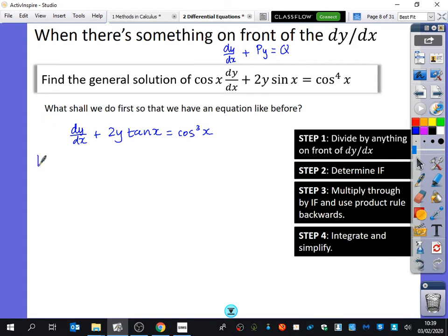So we get dy/dx plus 2y tan x equals cos cubed x, okay? Now we need to find out what the integrating factor is. So I write down IF. What is p equal to here? 2 tan x. So the integral of p with respect to x is the integral of 2 tan x with respect to x, which is ln sec x. So it's going to be 2 ln sec x. You find that in the formula book that tan integrates to ln sec x. Now, the integrating factor is e to the integral of p dx, which is e to the 2 ln sec x, which is just sec squared x.